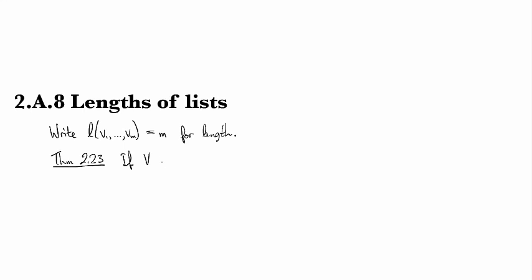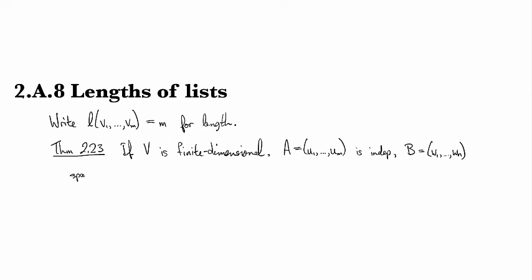And that says that if V is finite dimensional, and A is an independent list, and B is a spanning list, then the length of A has to be less than or equal to the length of B.